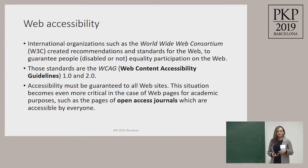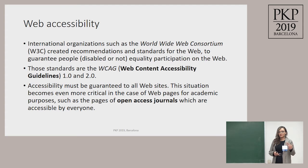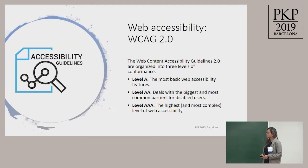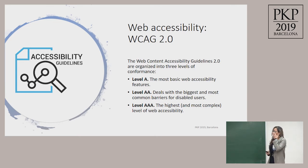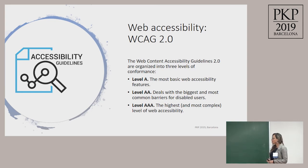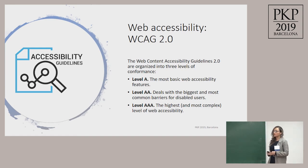This situation becomes even more critical for academic sites or academic websites — for example, journal repositories that have to be accessible for everyone, but that is not the real situation. The Web Accessibility guideline 2.0 has three different levels. Level A contains the most basic web accessibility features — they are really basic but make a big difference. Level AA addresses the biggest and most common barriers you can find on a site. And Level AAA contains the highest or most complicated features to solve.